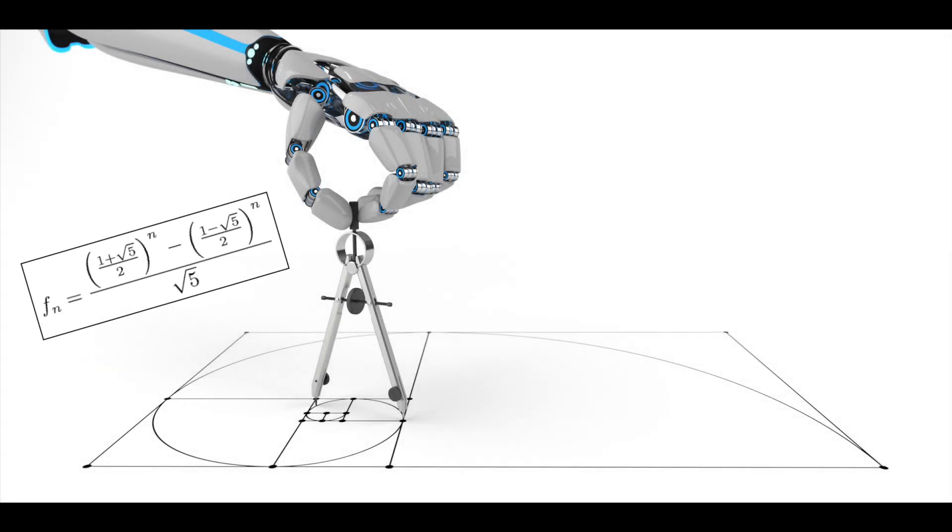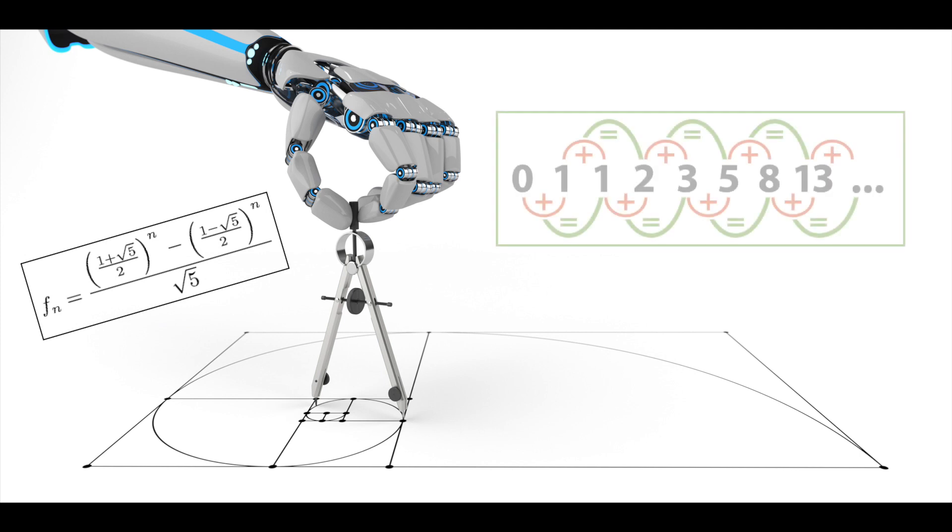The Fibonacci sequence is one of the most famous formulas in mathematics. Each number in the sequence is the sum of the two numbers that precede it.